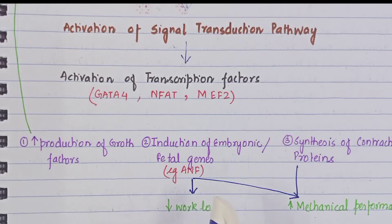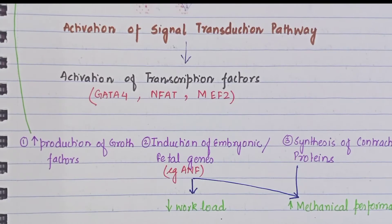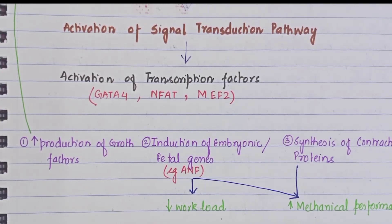The induction of embryonic or fetal gene includes atrial natriuretic factor (ANF). ANF is expressed in the embryonic heart. In the adult heart, ANF acts as a hormone that decreases blood volume and pressure, thereby reducing blood pressure and improving mechanical performance.